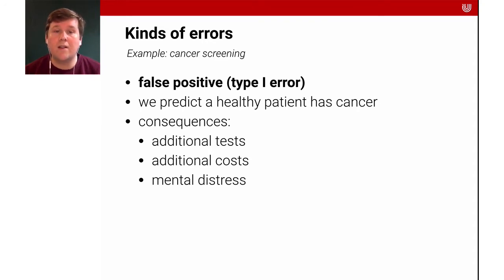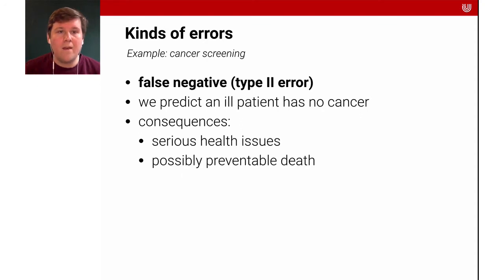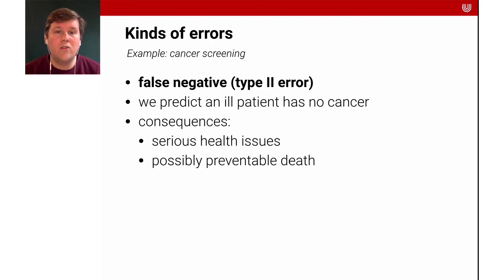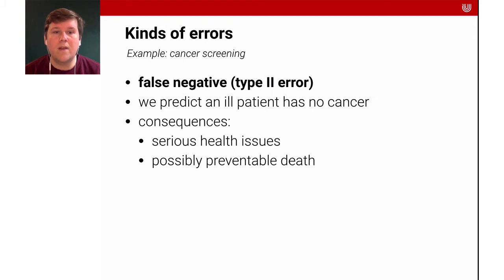This has consequences: it could mean additional testing, additional cost, and a lot of mental distress. But there's also the false negative, the type 2 error, where we predict that a patient with cancer has no cancer — telling that person they are healthy. This has far more serious consequences: cancer would go untreated, and it could possibly result in a preventable death.